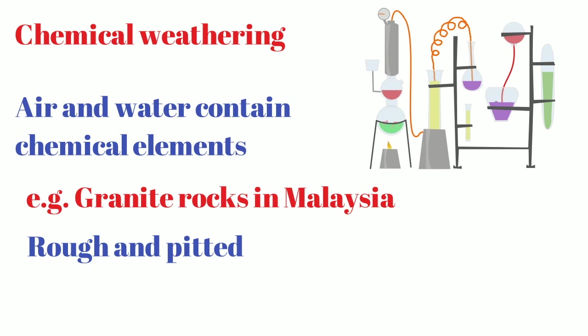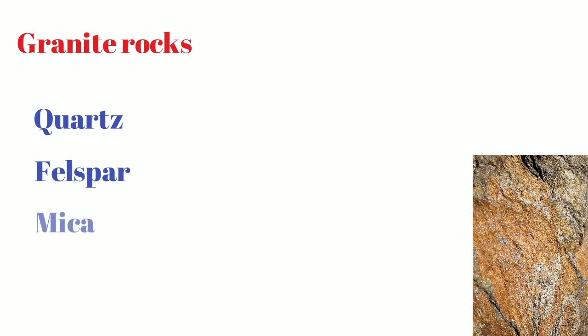Granite stones are basically made of three minerals: quartz, feldspar, and mica. The feldspar weathers very fast compared to quartz. So the crystals will break down and the quartz will loosen up. This is why a coarse sandy residue is made.